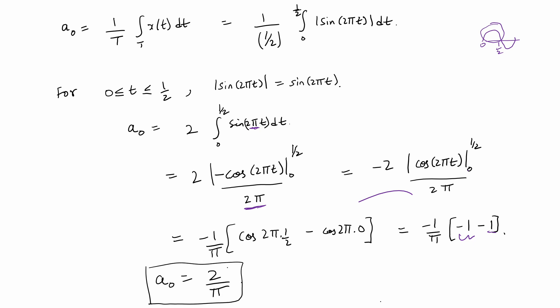a₀ is the average value of the signal over one time period, and it makes sense that it is 2/π. The sine function has higher concentration near 1 than near 0, so we'd naturally expect the average to be above 1/2 but below 1. Computing 2/π gives approximately 0.636, which is clearly above 1/2. So a₀ = 2/π, and now we need the remaining Fourier series coefficients — the aₖ's for k ≠ 0.